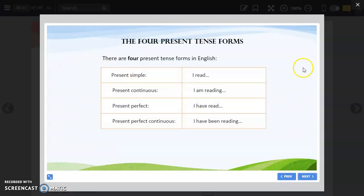So there are four present tense forms. Present simple: I read. Present continuous: I am reading. Present perfect: I have read. Present perfect continuous: I have been reading. The last is present perfect continuous. There can be confusion in understanding this.